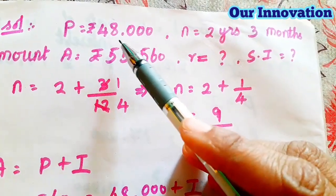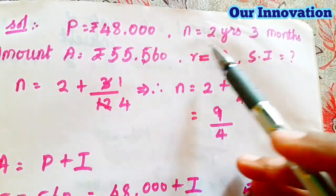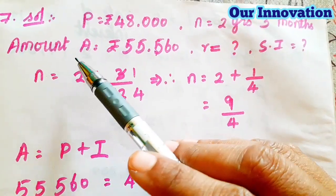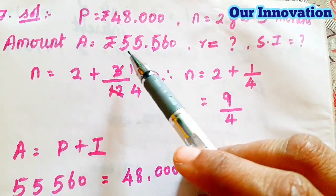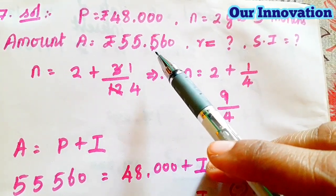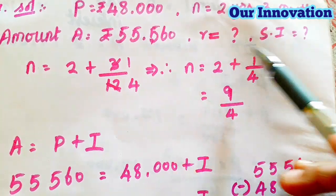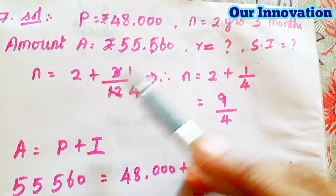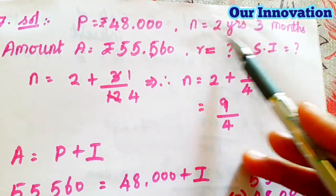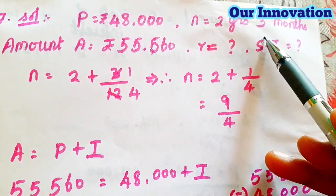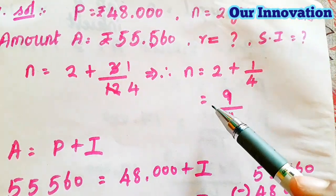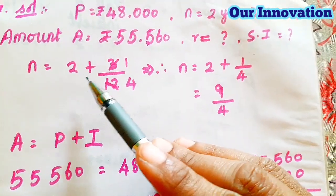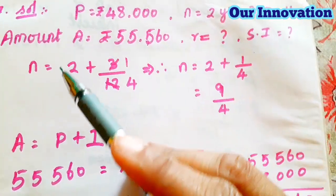Problem 7 solution: P is equal to ₹48,000; n is equal to 2 years 3 months; amount A is equal to ₹55,560. We need to find r and the simple interest. First, convert n: 2 years and 3 months.